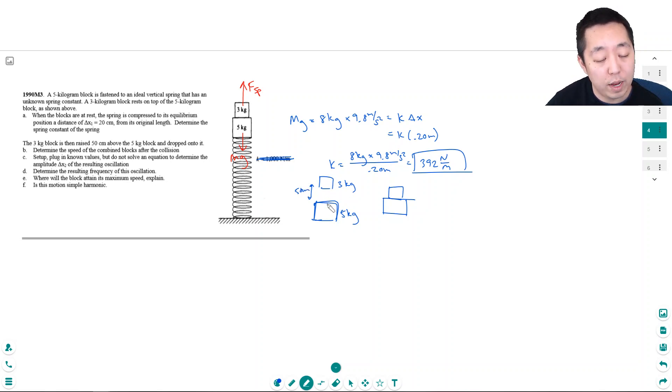First, what I want to do is figure out how fast this block is going right before it hits this block. This block, since it falls 50 centimeters, is just mgh equals one half mv squared, or v is equal to square root of 2gh because this is the energy conversion, this is just falling before the collision. So the velocity of this block is going to be 2 times 9.8 meters per second squared times 0.5 meters, and I get 3.13 meters per second.